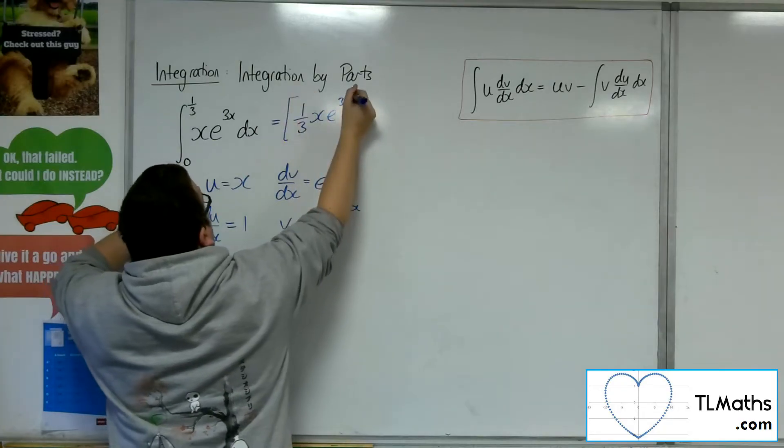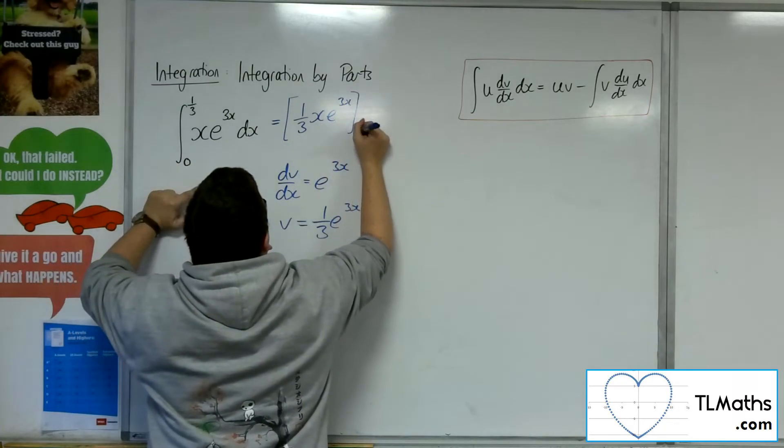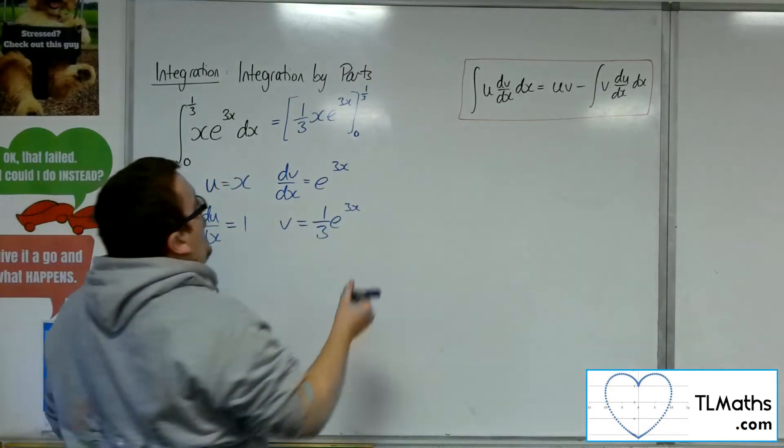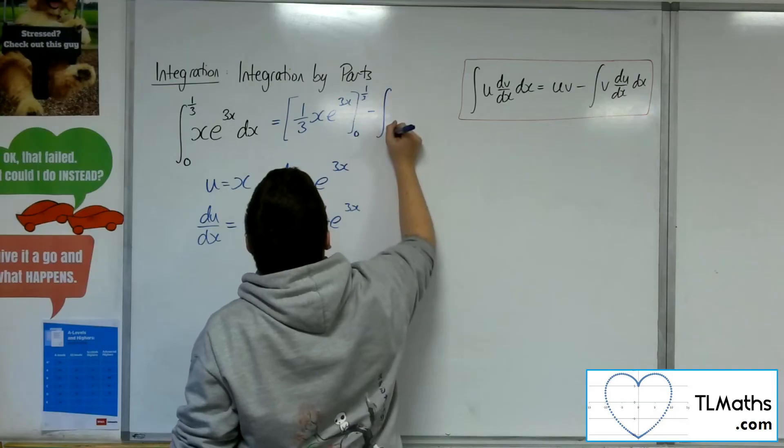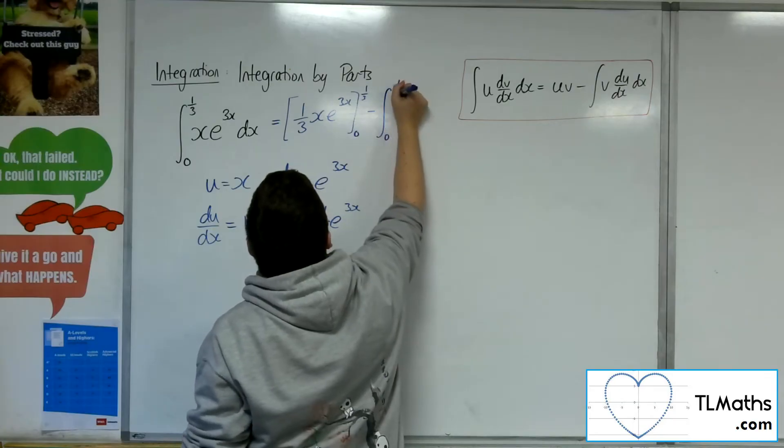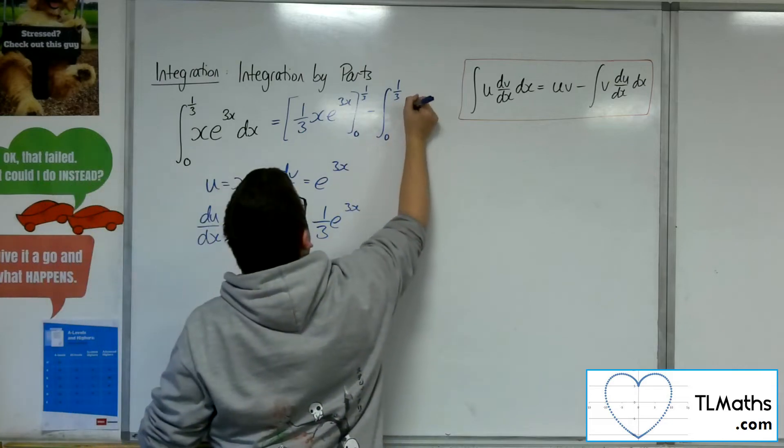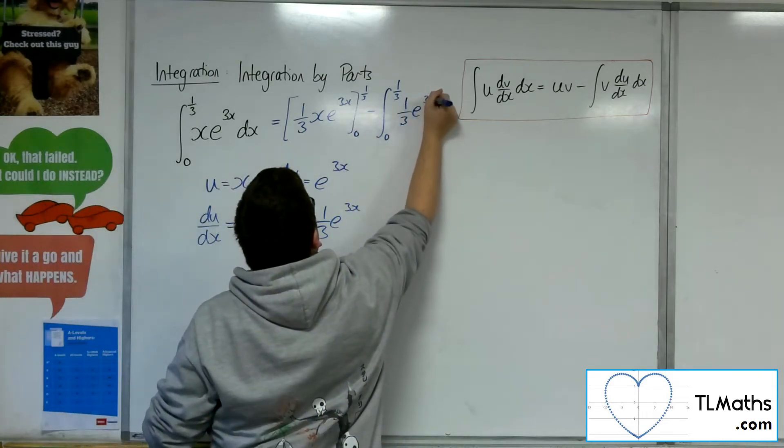Now what I want to do is put that in a square bracket, because that's ready to be evaluated. And then I've got the integral between 0 and 1/3 of v du/dx, so 1/3 e to the 3x dx.